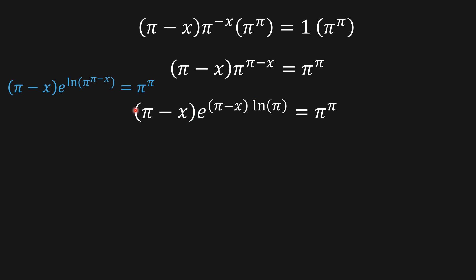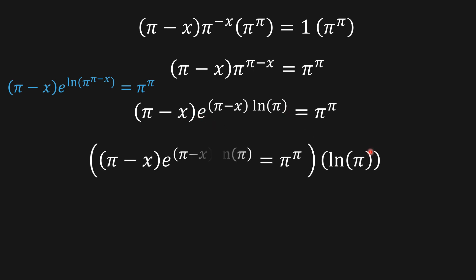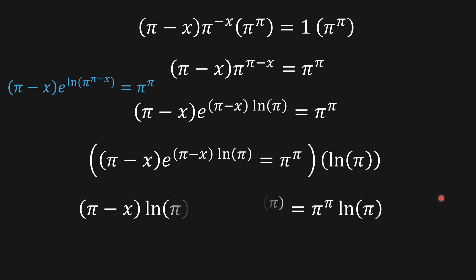There is something missing — ln of π — so in order to have ln of π multiplying the exponent, we multiply both sides by ln of π. After multiplying both sides by ln of π, we can see that both sides now match the Lambert W form: a times e to the a.